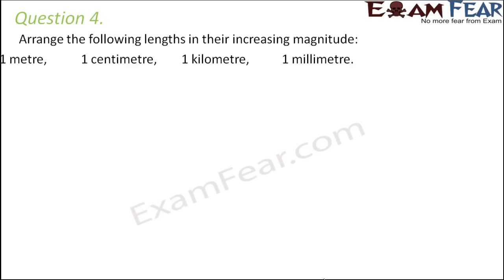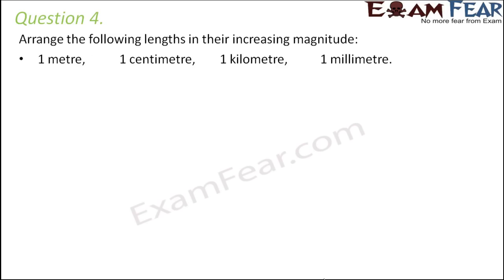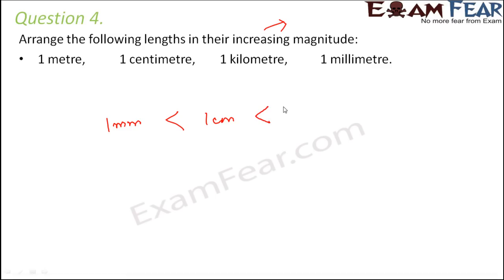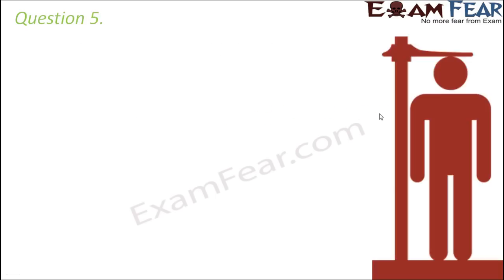Question number four: arrange the following lengths in increasing magnitude — that is, from smallest to biggest. The smallest unit is millimeter, then centimeter, then meter, and the largest is kilometer.